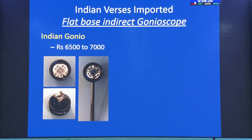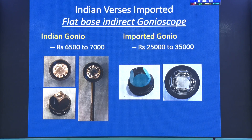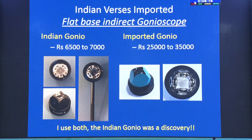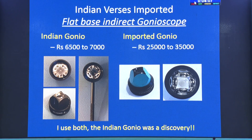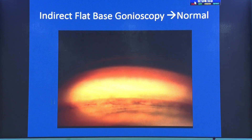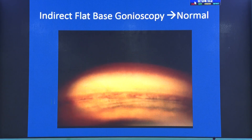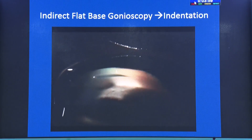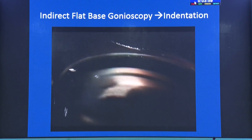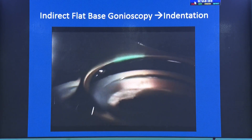Then comes Indian versus imported. The Indian lens is around ₹6,500 and imported ones are about ₹25,000 to ₹35,000. I used both for this talk and found that the Indian ones are quite good — the quality has improved. You can see clearly normal angle structures, and even subtle indentation changes in the images taken with the Indian lens.